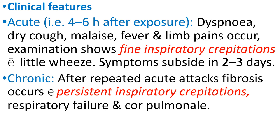Chronic hypersensitivity pneumonitis: after repeated acute attacks, fibrosis occurs with persistent inspiratory crepitations, respiratory failure, and cor pulmonale.